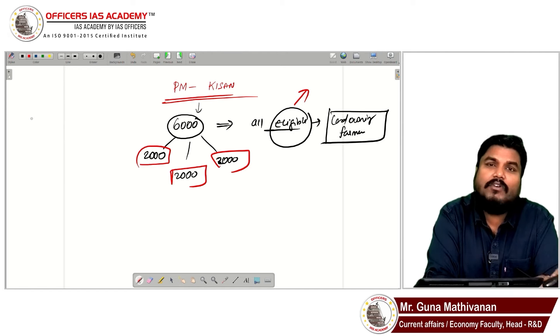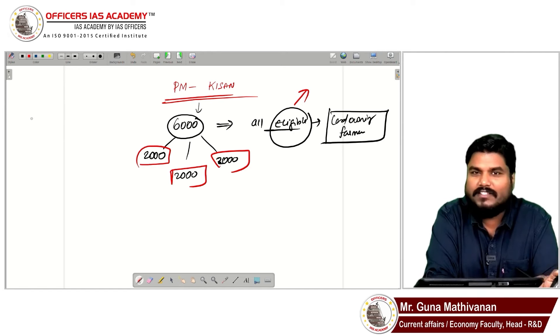If you are receiving a pension of more than 10,000 rupees per month, this PM Kissan support will not be given to you.